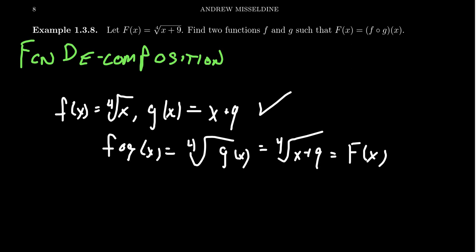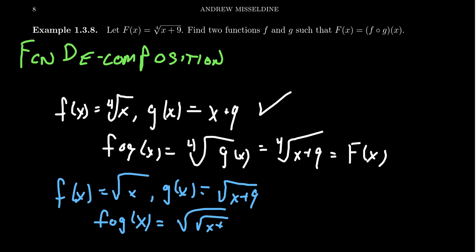But compared to an earlier example, one of us might be tempted to do something like the following. We could take F of X to equal the square root of X, and then G of X could be the square root of X plus nine. In which case, we then get F composed with G. If we put this back together, we're going to get the square root of the square root of X plus nine, which is then equal to the fourth root of X plus nine. That works. And so it turns out this composition is not exactly a unique process. It can be done in multiple ways.